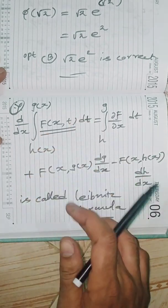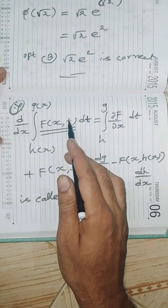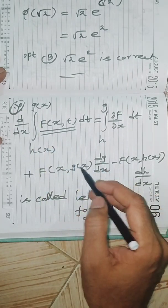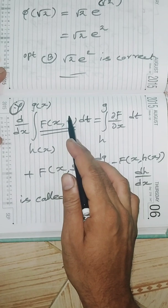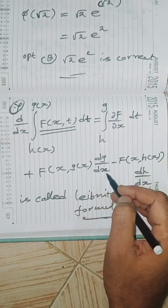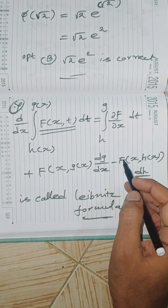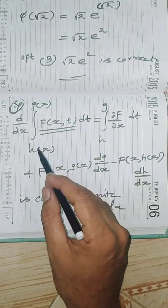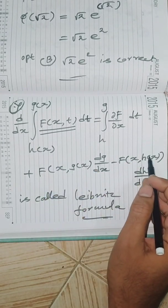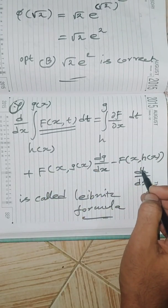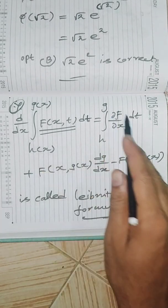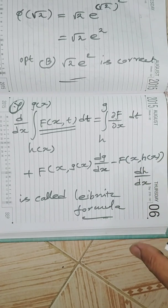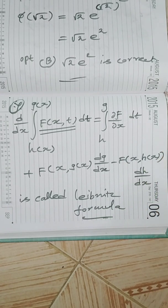In the Leibniz formula, when differentiating d/dx of the integral, we get: the integral of ∂f/∂x dt, plus f(x, g(x))·g'(x) for the upper limit, minus f(x, h(x))·h'(x) for the lower limit. Using this formula in the problem makes it much easier to solve.